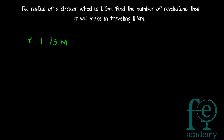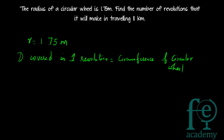The distance traveled in one revolution is equal to the circumference of the circular wheel. That is the basic point you have to remember. These kinds of questions are very common for competitive exams. The only point to remember is that the distance covered in one revolution is equal to the circumference of the circular wheel.